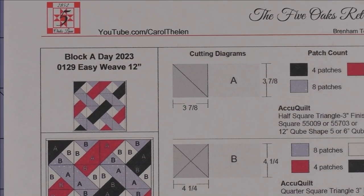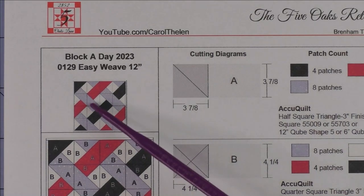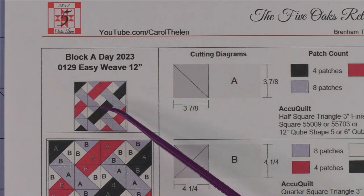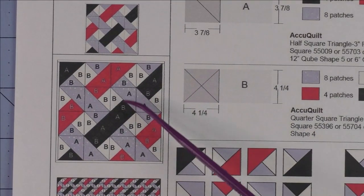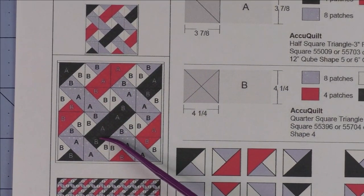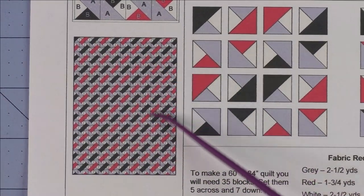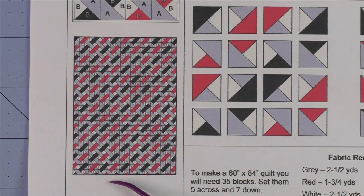I call this block easy weave because it's a loosely woven look—it looks like woven threads. It's a 12-inch block, and here is the block diagram. Here's what the quilt looks like: a 60 by 84 inch quilt.